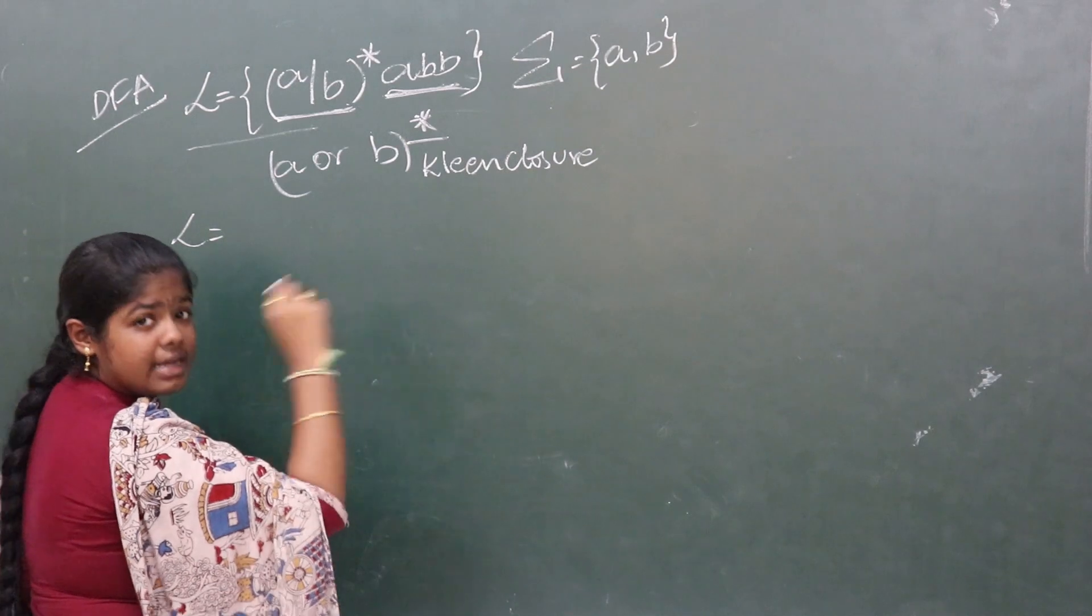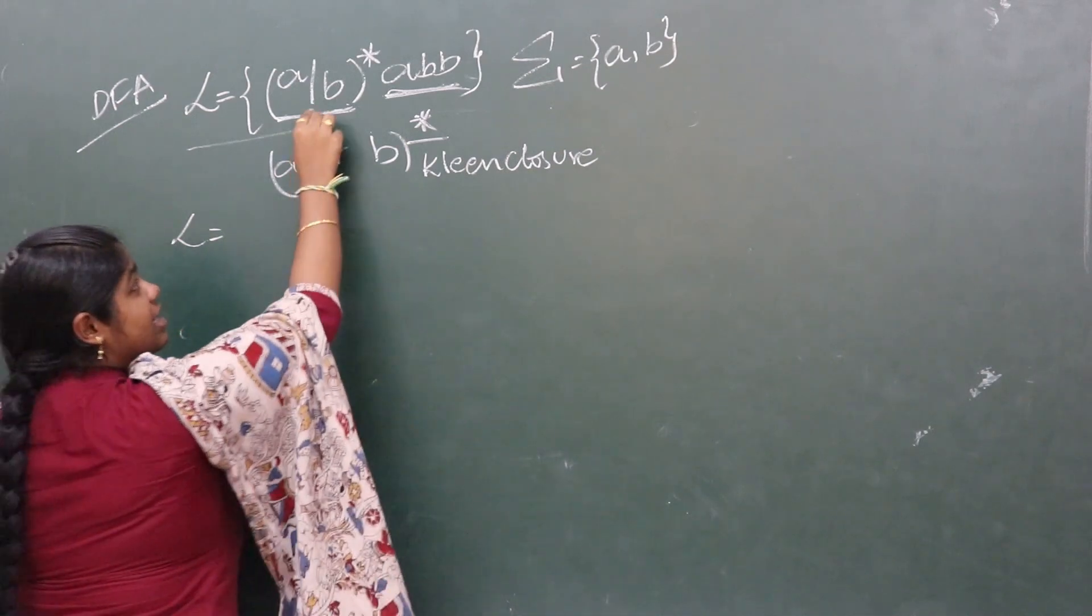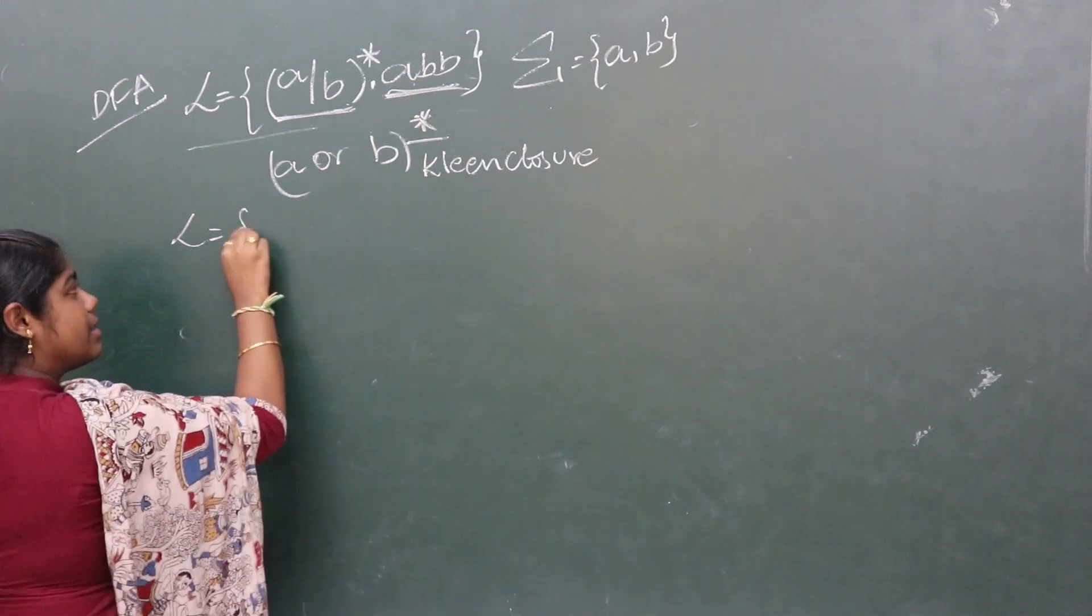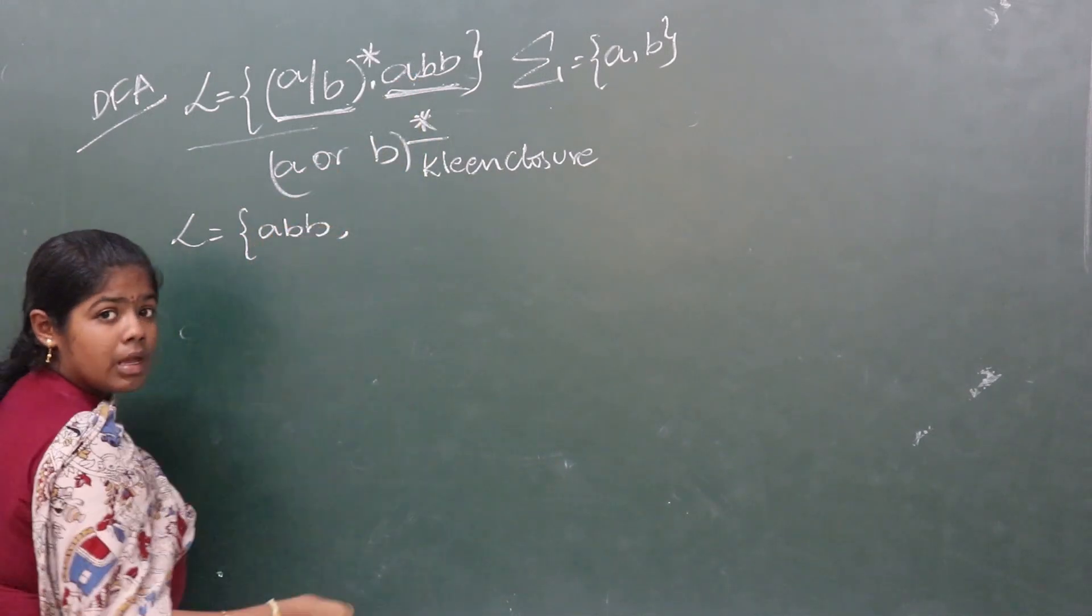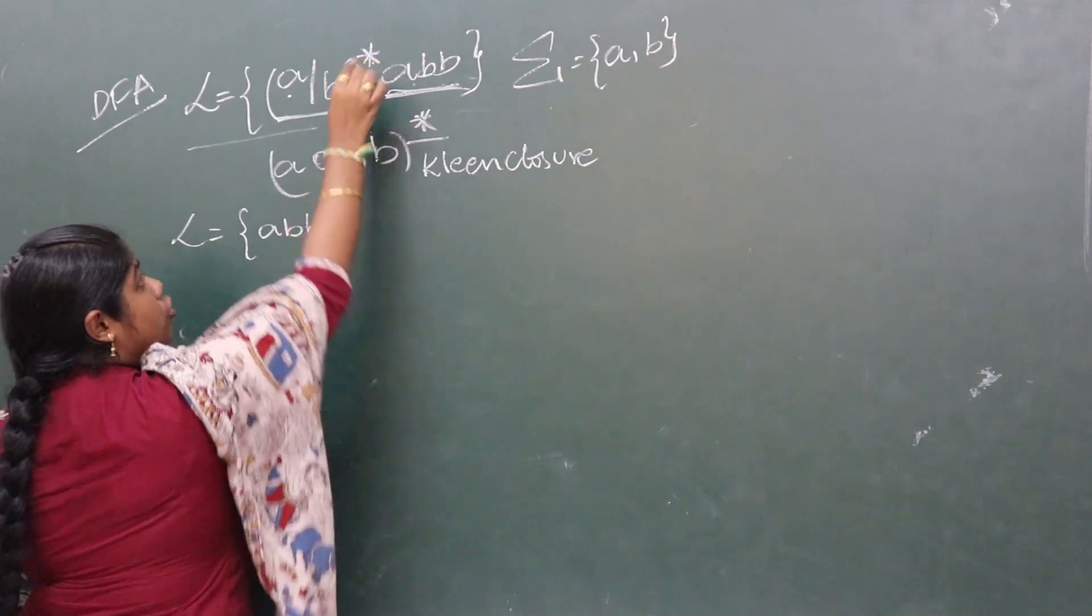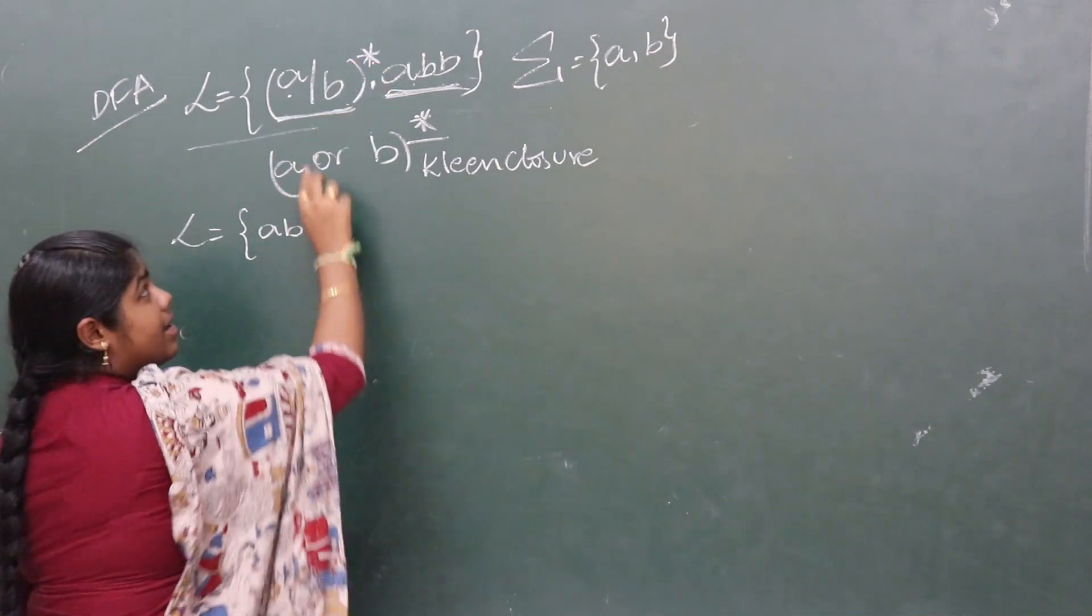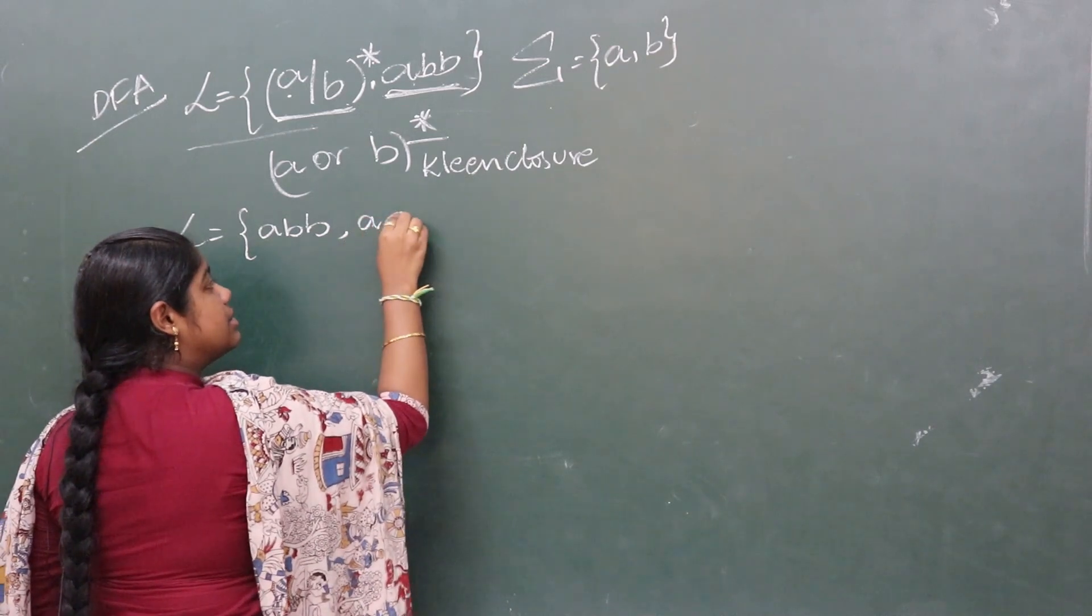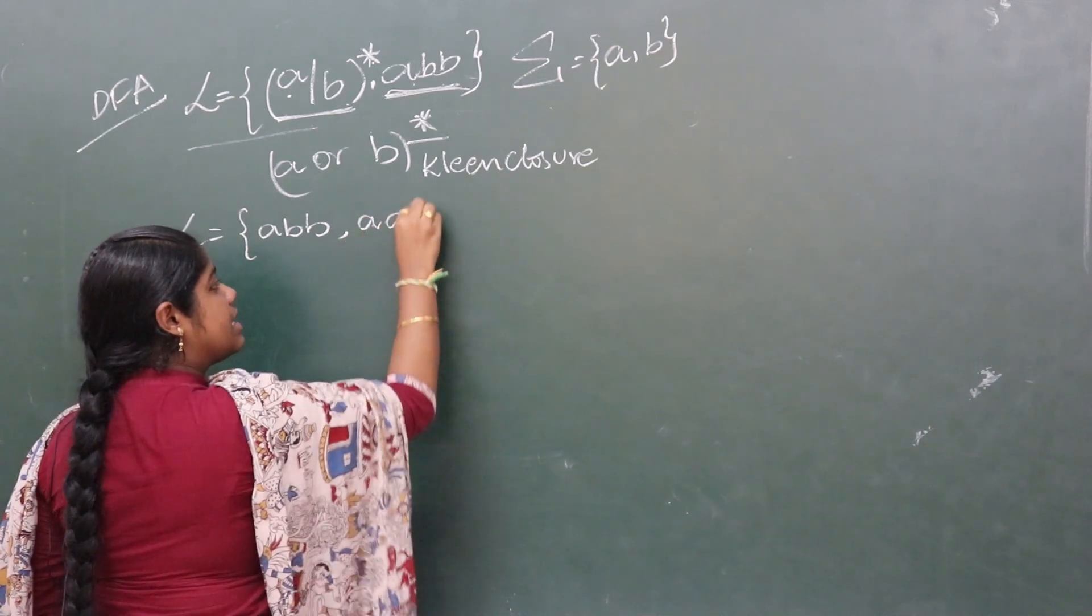The automaton is drawn from the first language. Kleene closure includes the null string. The null string concatenated with ABB gives ABB. Next, A closure means a single A, so we get AABB.